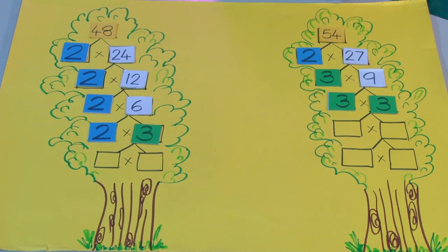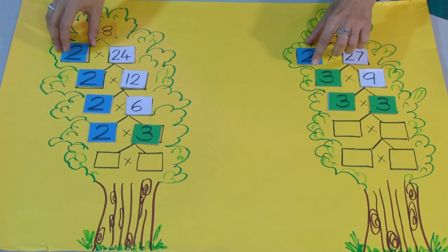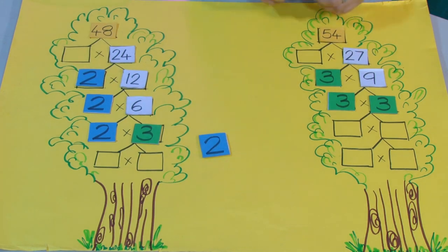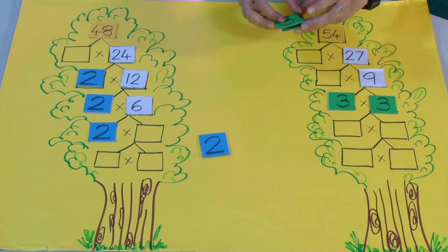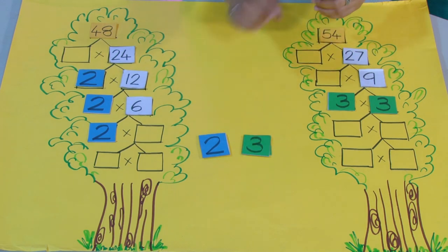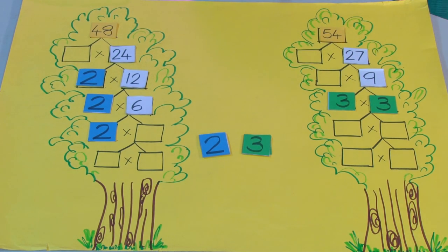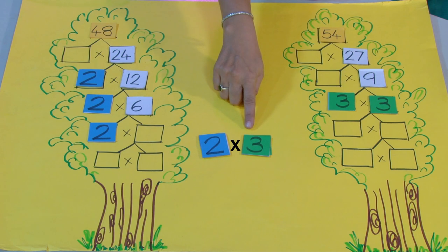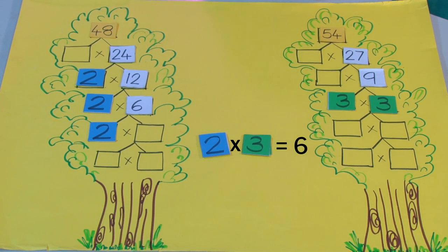Now the next step is finding the common factors. Here we can see that 2 is common, so we take it and keep it here. 3 is common, so we take it together and place it here. There are no other common factors, so 2 and 3 are the common factors. But we have to find the highest common factor, so we need to take the product of 2 and 3, that is 6. So the highest common factor, HCF, of 48 and 54 will be 6.